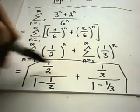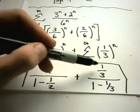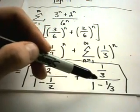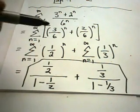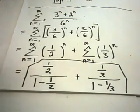You'll get 1 half on the bottom, so the left side is converging to 1. You'll get 1 third divided by 2 thirds, and what's that? Just 2. So it looks like this series is going to converge to 3.